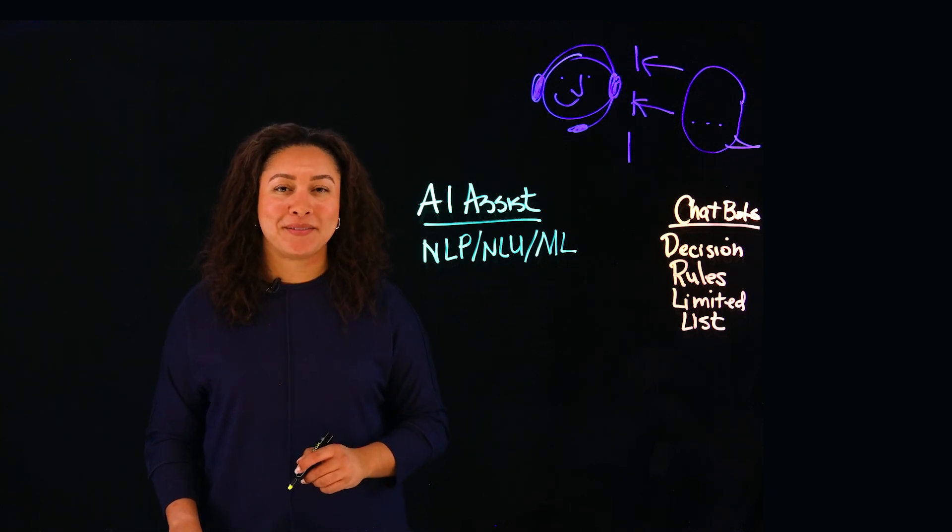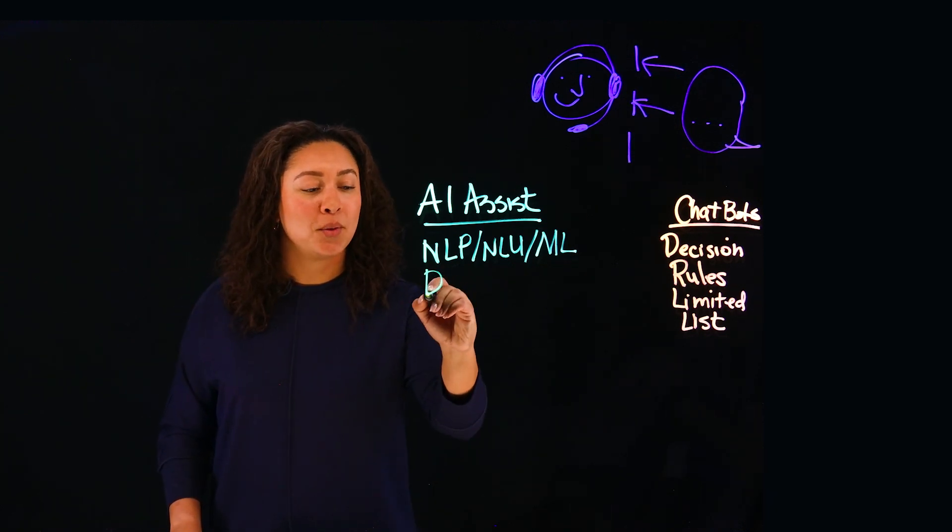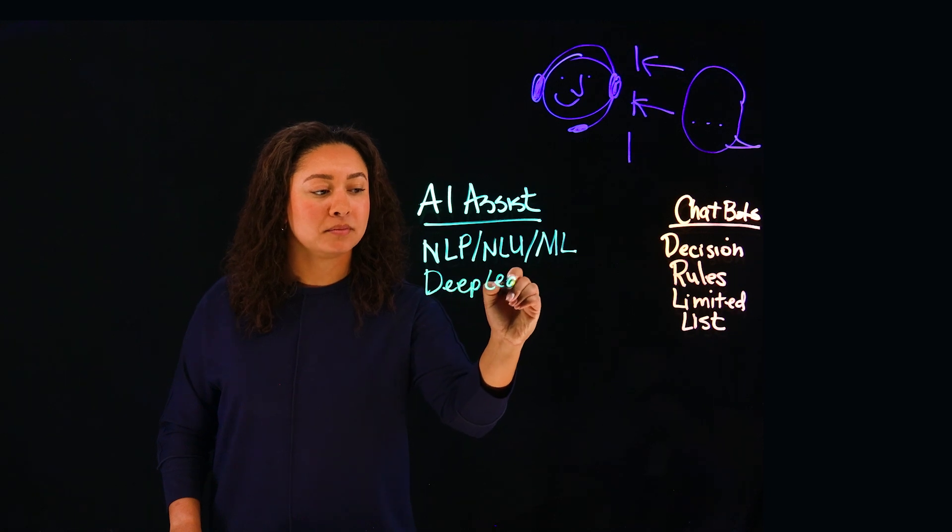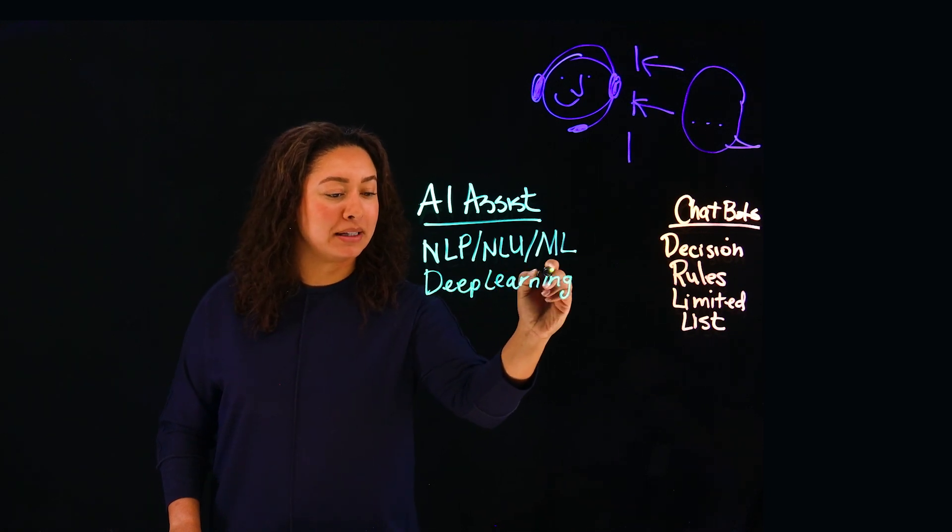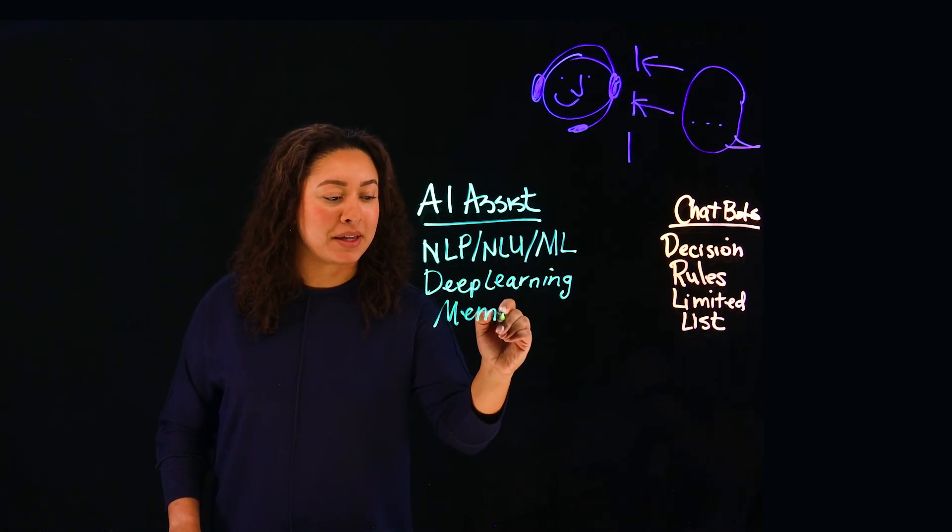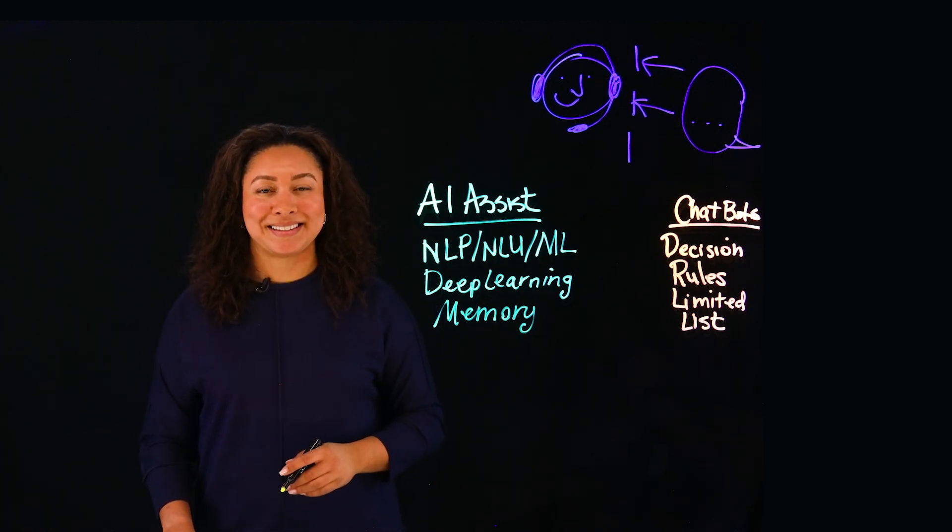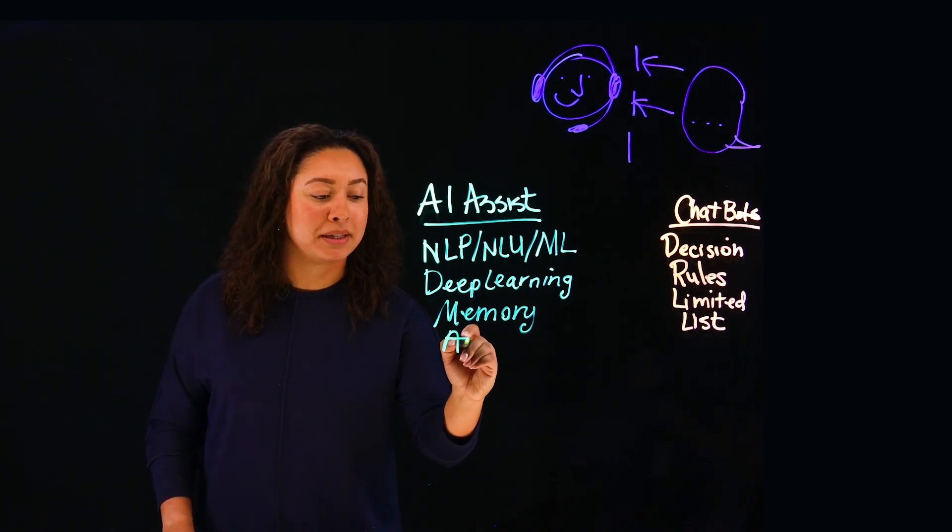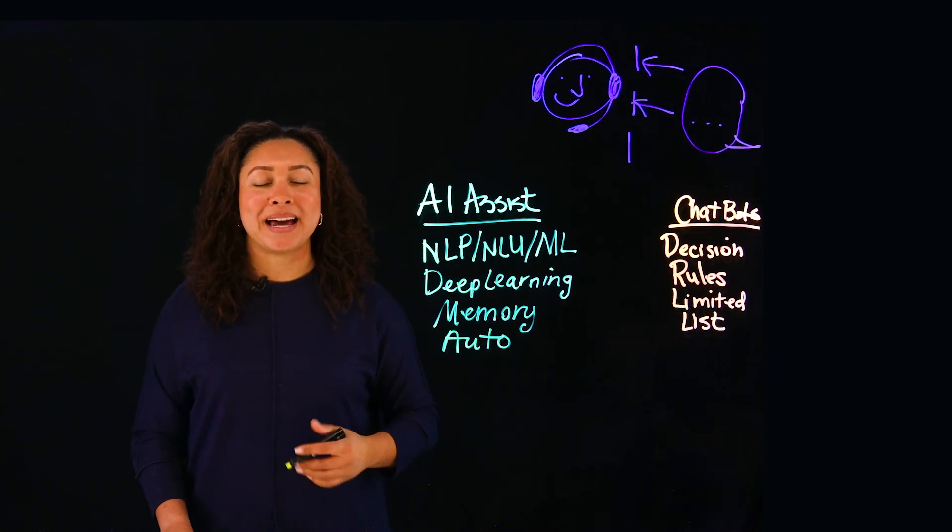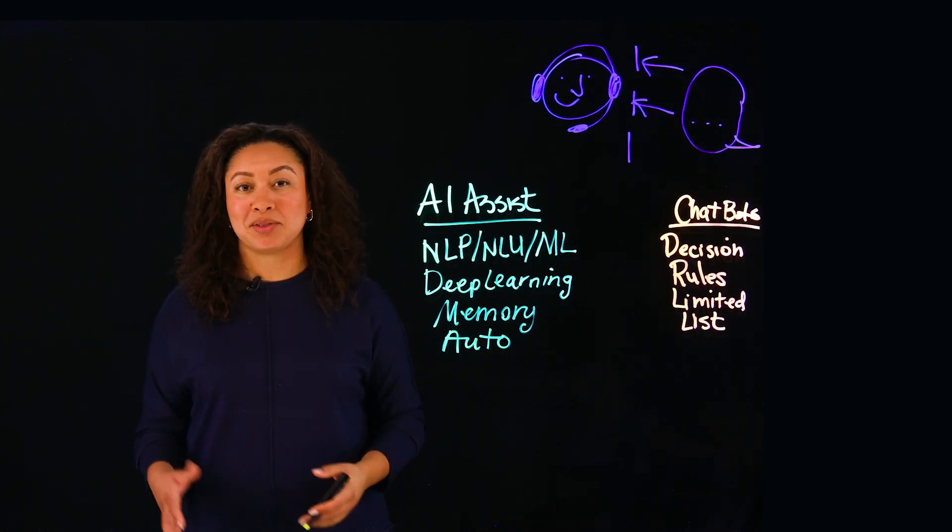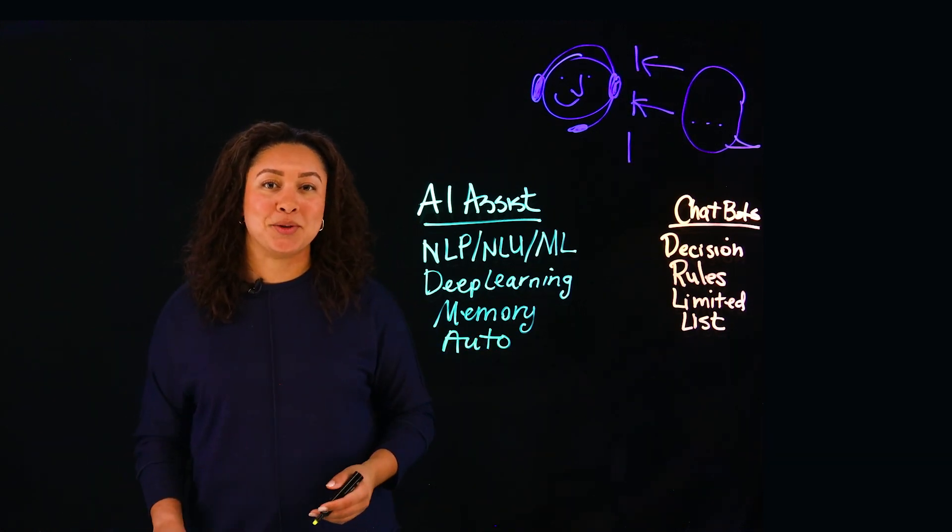AI assistants also have the ability to learn over time, which we call deep learning. They also have memory capabilities that allow them to remember the history of a user's inquiries and better assist them. Robust AI assistants may also have automation capabilities that allow them to execute tasks on the back-end like send an email or update a user's account information.